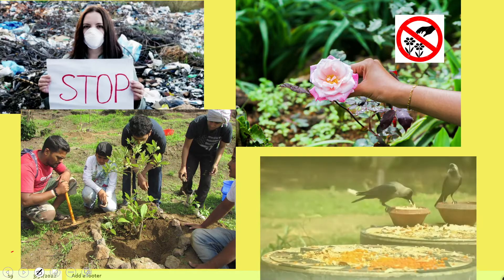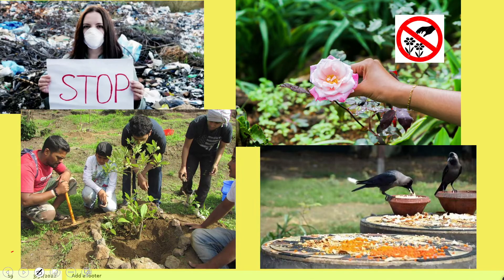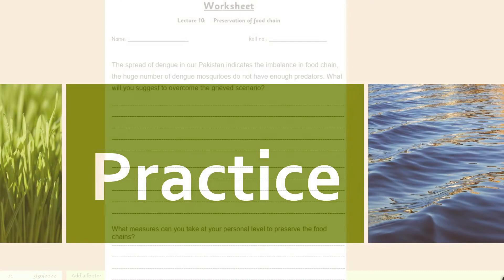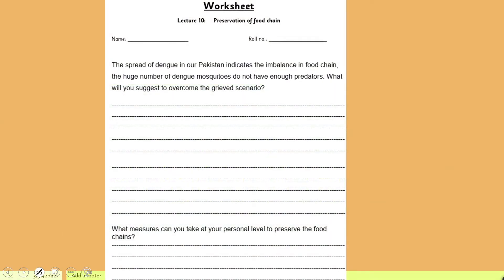Stop pollution, plant more and more trees, avoid deforestation, and avoid over-hunting. Now it is time for practice. You can download this worksheet from the description box below this video, or get it in print form from your teacher. Write down your name and roll number. The spread of dengue in Pakistan indicates the imbalance in the food chain — the huge number of dengue mosquitoes do not have enough predators. What will you suggest to overcome this scenario?